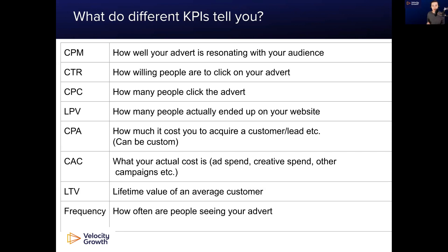CPM is how well your advert is resonating with 1,000 people. What's interesting about Facebook and all social media platforms is that their core proxy metric is trying to hold people's attention for as long as possible. So the less your advert resonates with your audience, the higher they will charge you. If your advert is highly engaging and resonating well with the audience, you have the luxury of a lower CPM. Many people overlook it, but your CPM is extremely important.